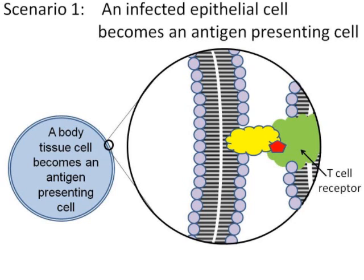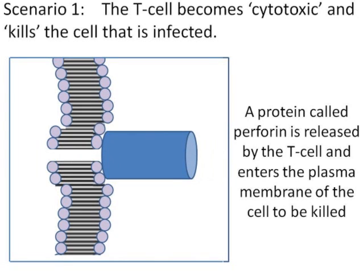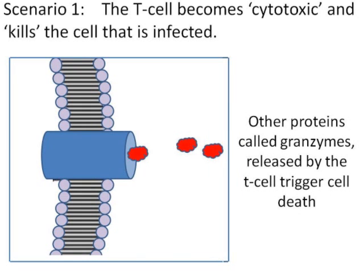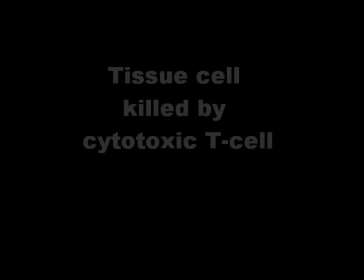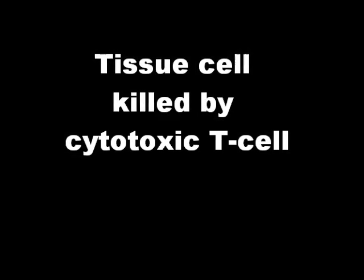It's a little bit beyond what you need to know, but it's a really exciting bit of biology. The T cell produces a protein called perforin, which is like a tube or pore that enters into the plasma membrane. Then the T cell produces another protein called a granzyme, and the granzymes flow into the cell and cause the cell to commit suicide. That's how the T cell reacts in response to a body cell presenting antigen.